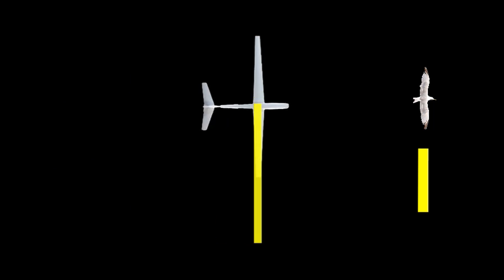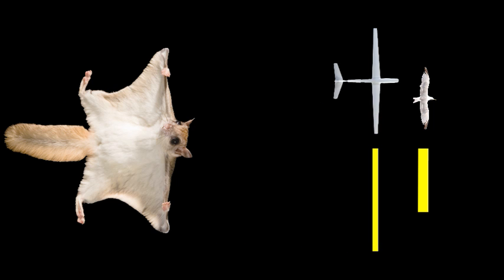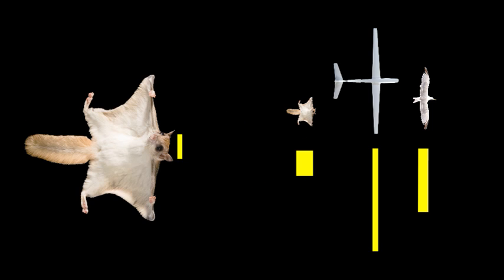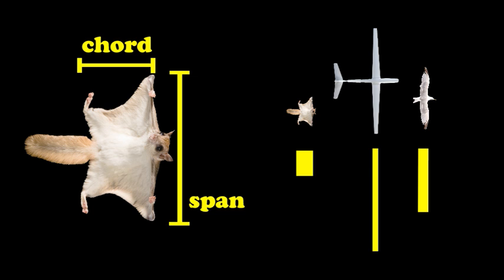This eagle has wings that are long and wide. This glider's wings are long but narrow. Our friend the flying squirrel, his wings are short but wide. The term we use to describe the length of the wing from the body is the wingspan. To describe how wide it is, we use the term cord. The important thing to keep in mind is that the span and the cord of each of these flyers are very, very different but they all manage to fly.